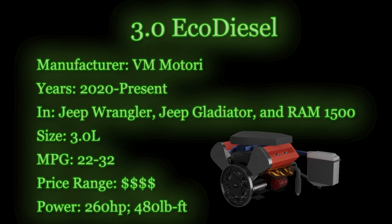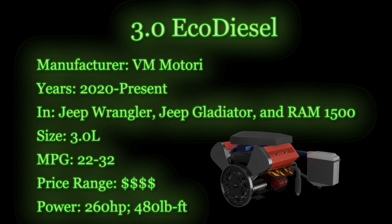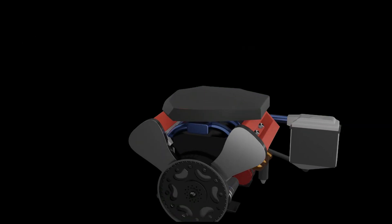This week's engine segment — today we're talking about the third generation 3.0-liter EcoDiesel. The third generation was released this year in the Jeep Wrangler, Jeep Gladiator, and Ram 1500, and is manufactured by the Italian VM Motori. It gets 22 to 32 miles per gallon with an impressive 260 horsepower and 480 lb-ft. EcoDiesels have unique engine blocks made of graphite instead of the usual cast iron or aluminum. Graphite is very light and handles high temperatures and pressures well, which is important for increasing fuel economy. The recommended oil spec is SAE 5W-40 full synthetic, changed in 2016 from SAE 5W-30 due to complaints of lost oil pressure.